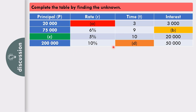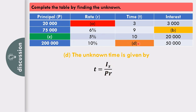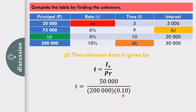In the last row, the unknown is time. The formula is T equals I sub S over PR. Substituting: T equals 50,000 over 200,000 times 10, giving time equals 2.5 years. So to find different unknowns, we derive the formula I sub S equals PRT depending on what we need to find.